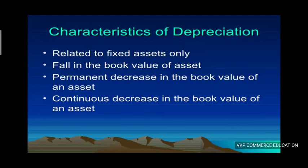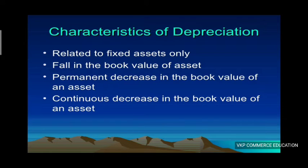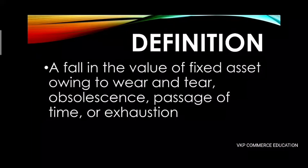Important characteristics of depreciation: it is related to fixed assets only. Depreciation represents a regular falling in the book value of the asset. For example, if the opening value is ninety thousand, the depreciation written off is nine thousand per year, and the book value falls continuously — a permanent and continuous decrease in book value year by year.